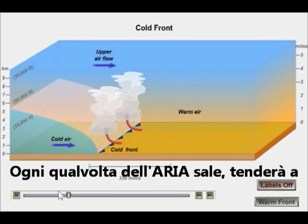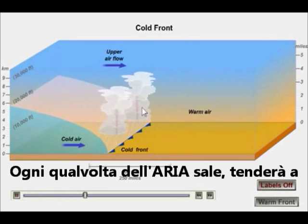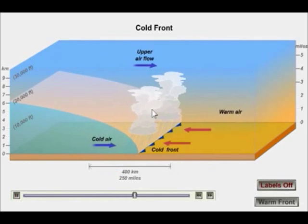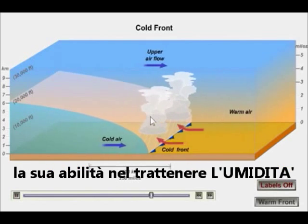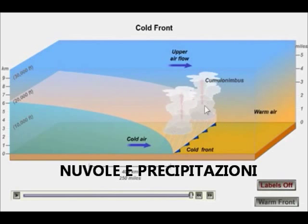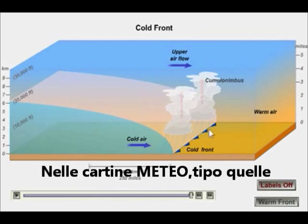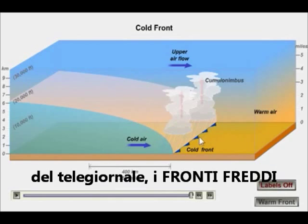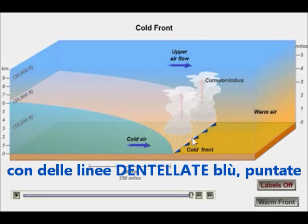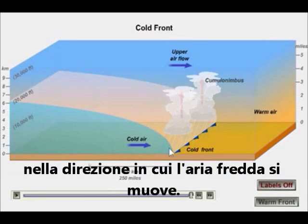Any time you have air rising upward, it's going to expand and cool and lose its ability to hold moisture, and this will give you a band of clouds and precipitation along a cold front. On weather maps, if you watch the weather on the news, you can see cold fronts marked by lines of blue teeth that point in the direction the cold air is moving.